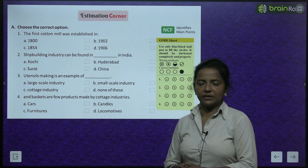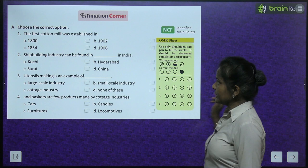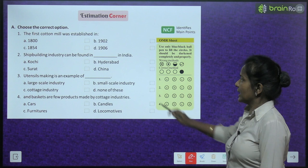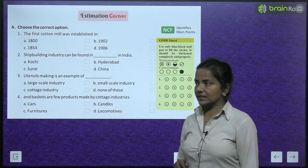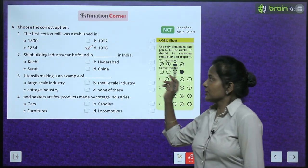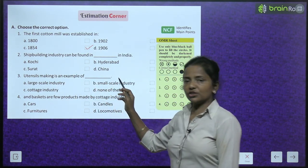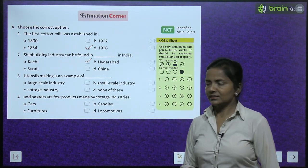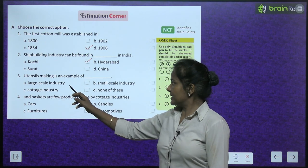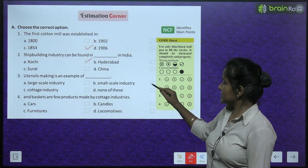Exercise time — Estimation corner. Choose the correct option: The first cotton mill was established in 1854. Shipbuilding industry is found in Kochi. Utensils making is an example of small scale industry.